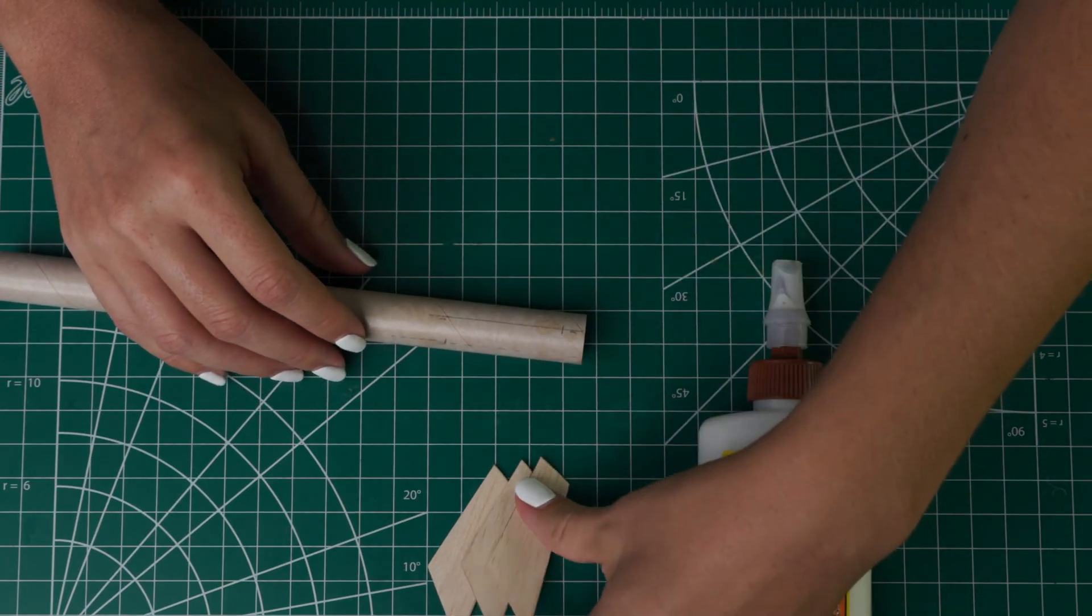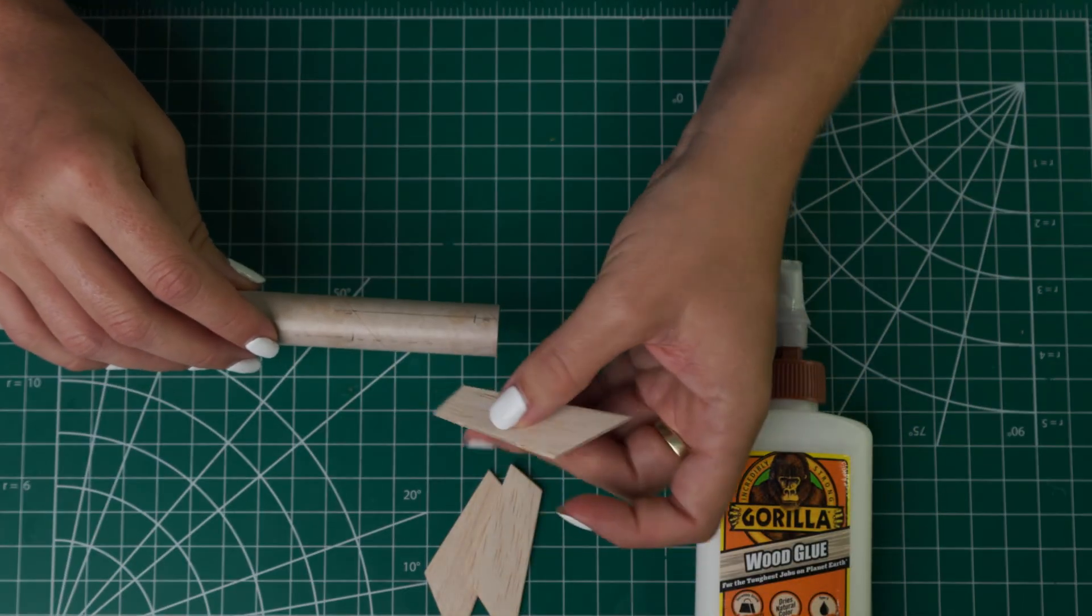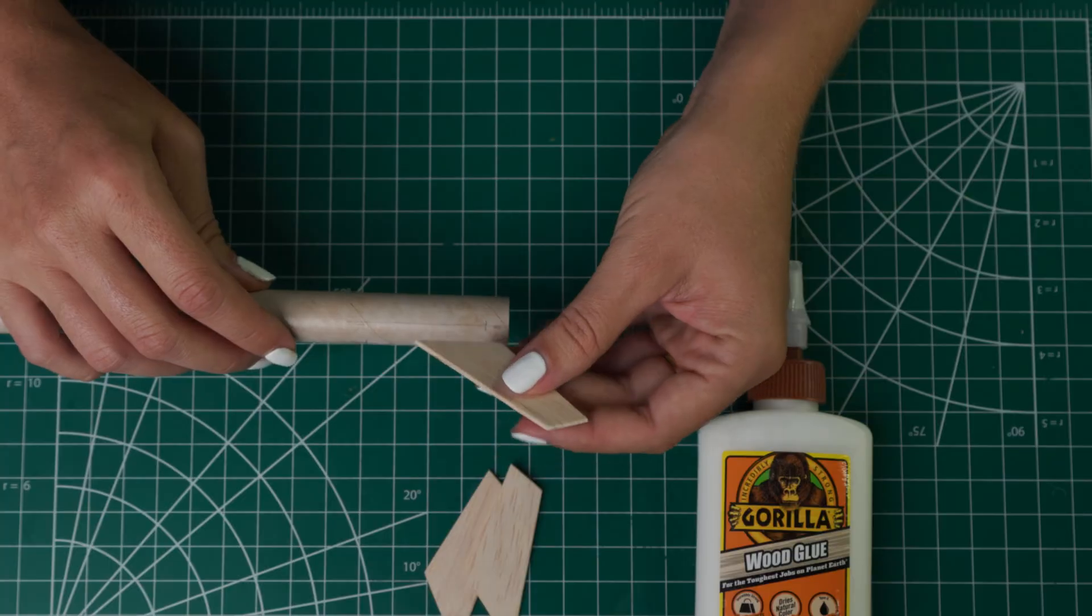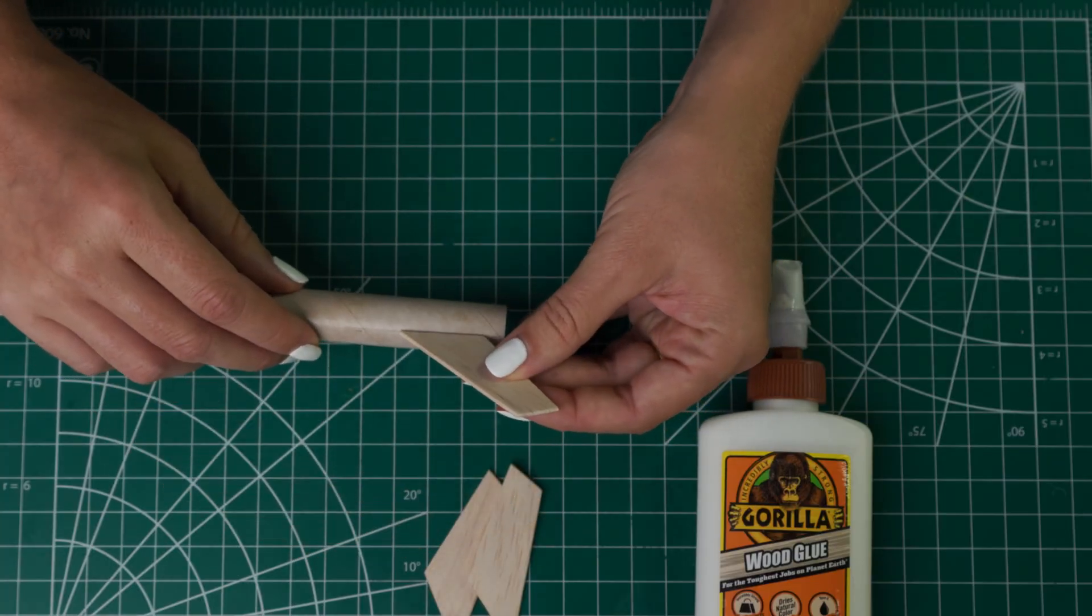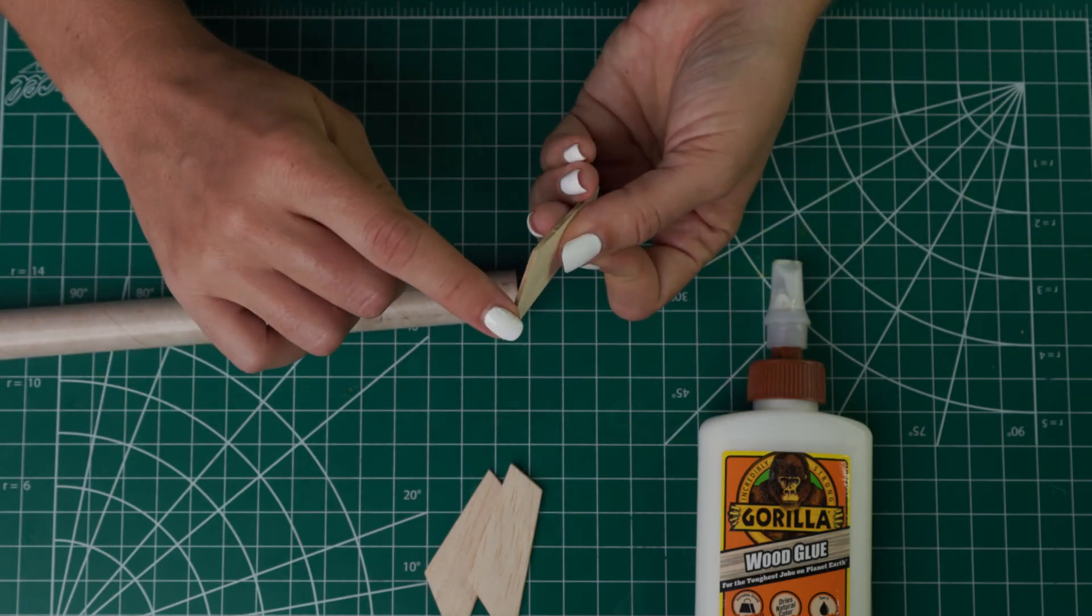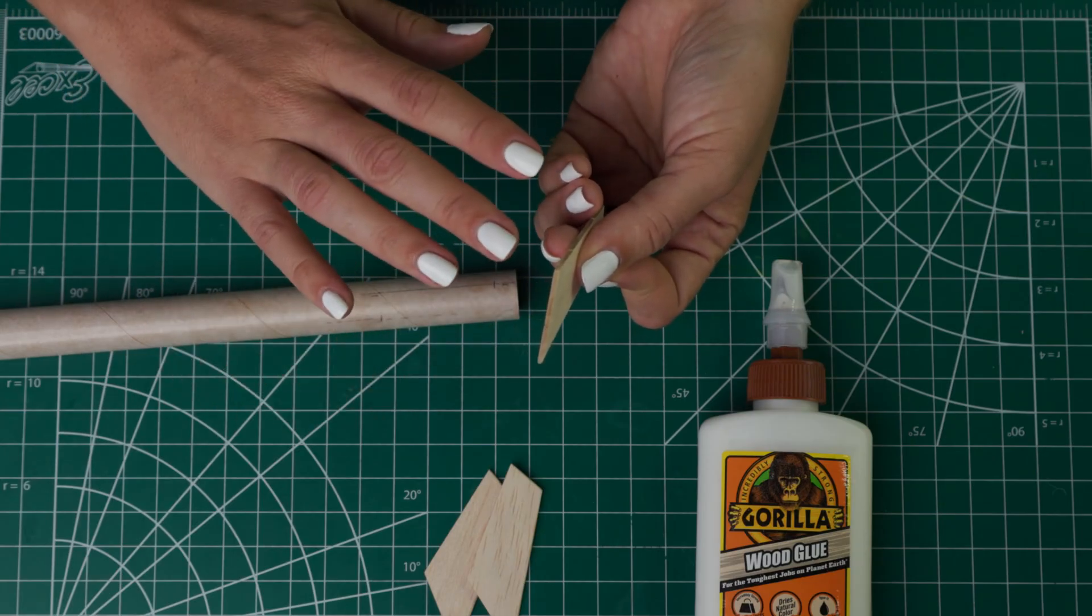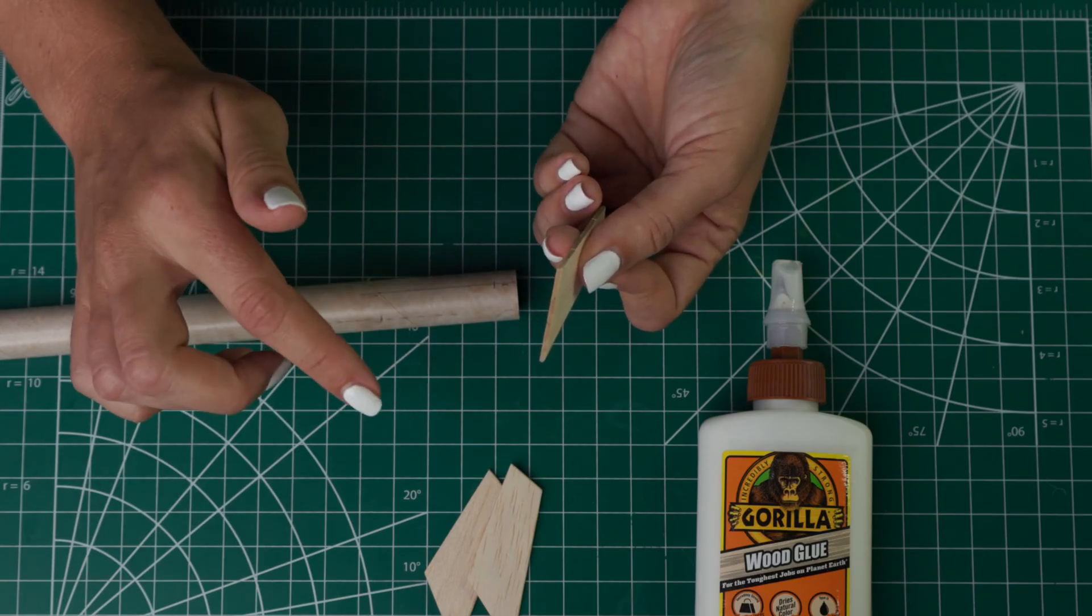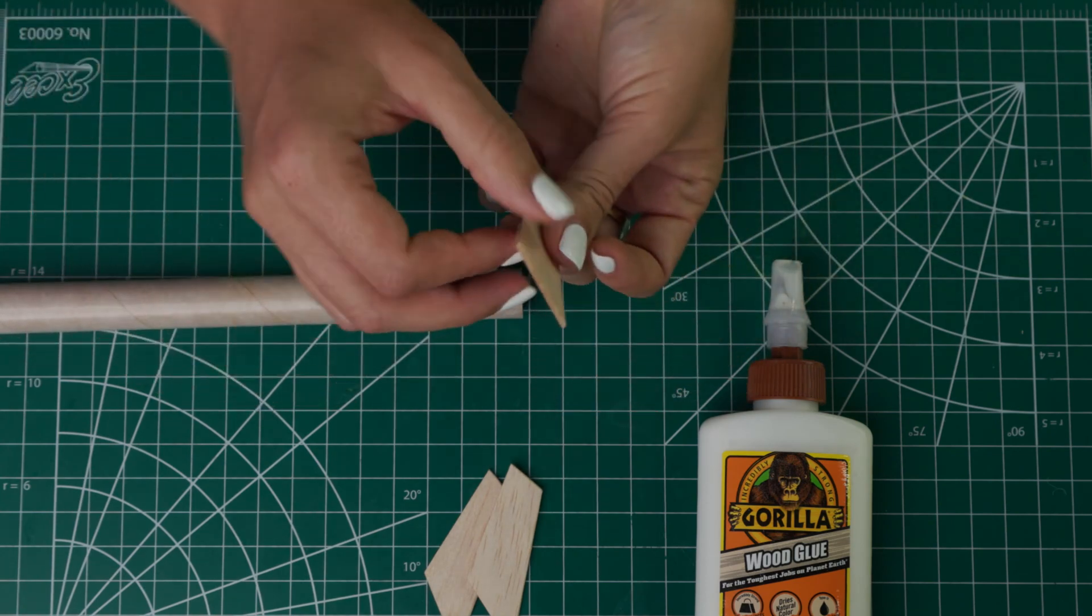For gluing on balsa wood fins, first thing is you always want to make sure you know which direction you're putting it. Look at your instructions, you have your rounded edges so those should be facing out. Plan out where you're going to put it. To make them stick better, add one layer of glue and let it dry for a minute, makes it really sticky and tacky, then add another layer and put it on.